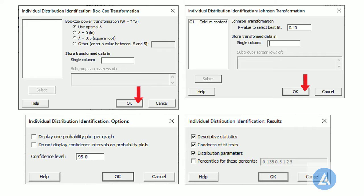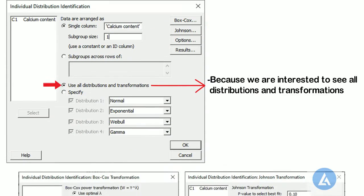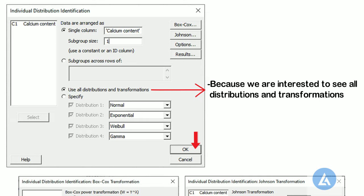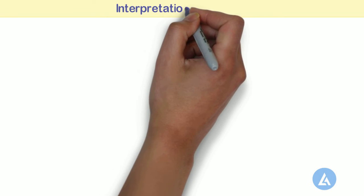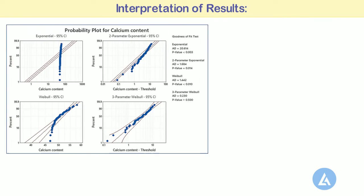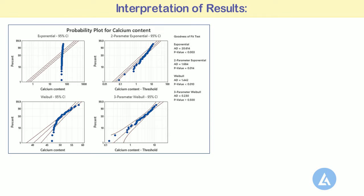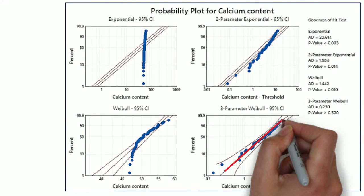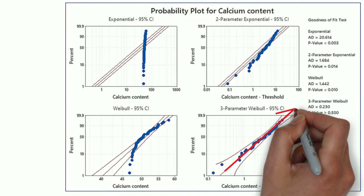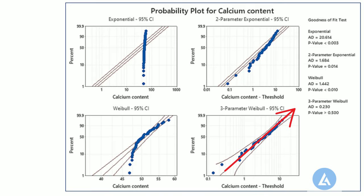Step 7: Click OK in each dialog box to get the results. You will get the results of the analysis in the session window and in the graph window. Minitab displays a probability plot as well as p-value for each distribution and transformation. If a distribution is a good fit for the data or if a transformation is effective, then the points on the plot follow a straight line within the confidence bounds and the p-value is greater than the alpha level. An alpha level of 0.05 is often used.